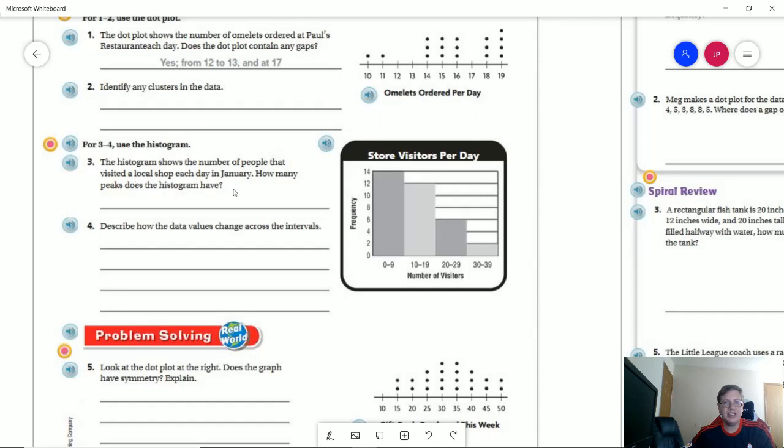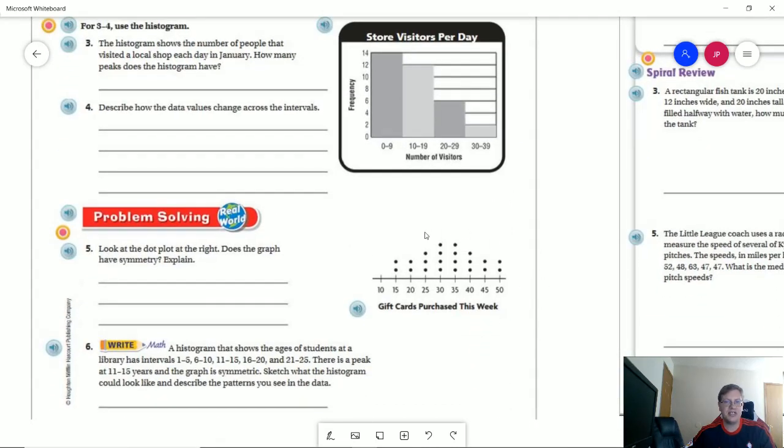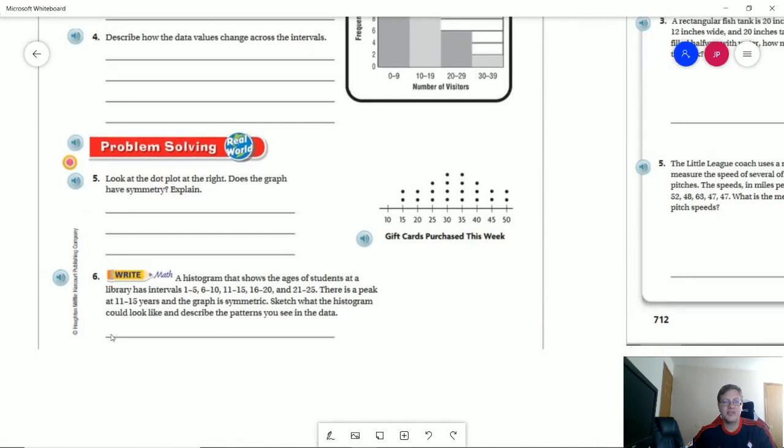Let's see. Number three, how many peaks? So we were looking at the top point. Number four, we're looking at how our values change as we go from left to right across there. Number five, do we have symmetry here? That should be relatively easy to find the answer for.